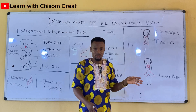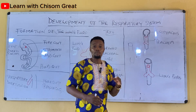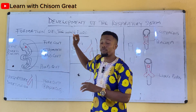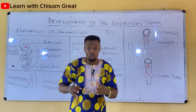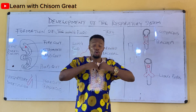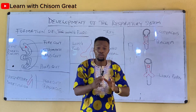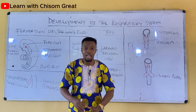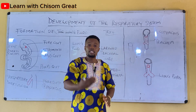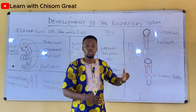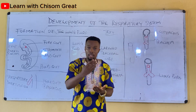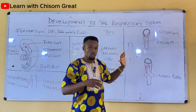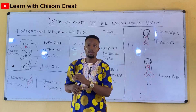Having seen the formation of the lung bud — where other respiratory organs begin to develop — let's now look at the development of the larynx, trachea, and the bronchi.